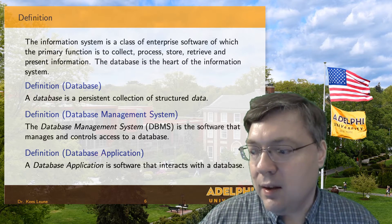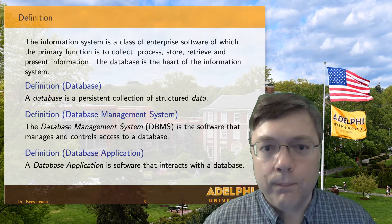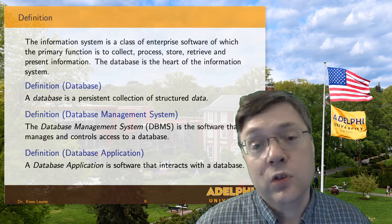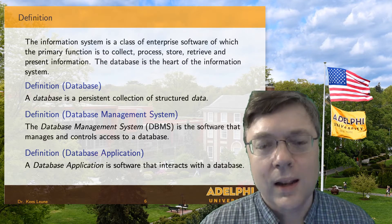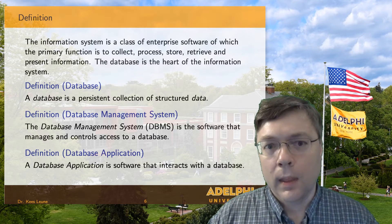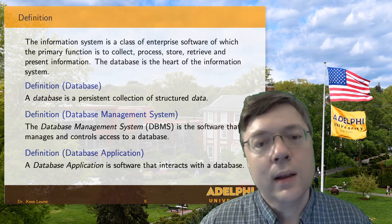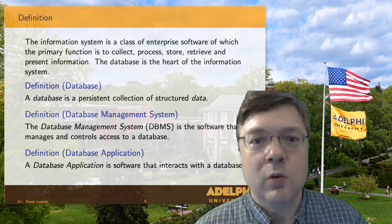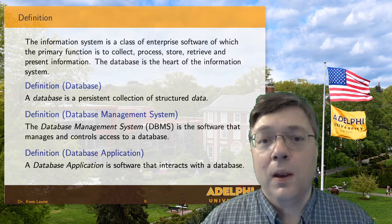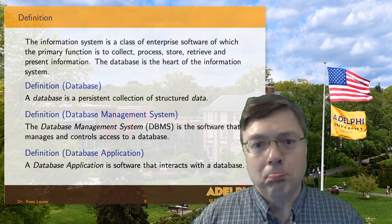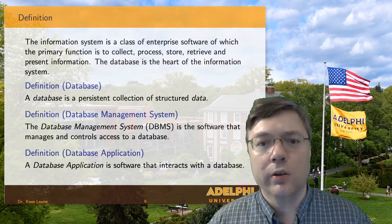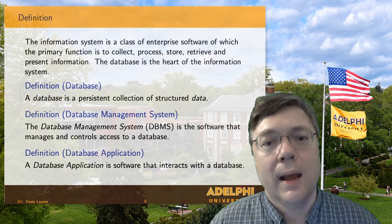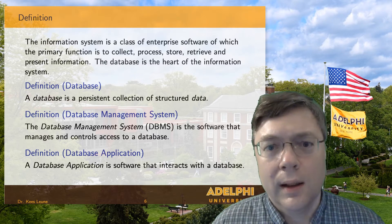The data is stored in the database. The database is accessed through the DBMS, and the software that interacts with the DBMS is called the database application. We interact with the DBMS; the DBMS interacts with the database to retrieve the data. Note that the word 'information' is not in here — information is data in context. As a database, we only care about the data. It's our database application that converts data into information for its user.